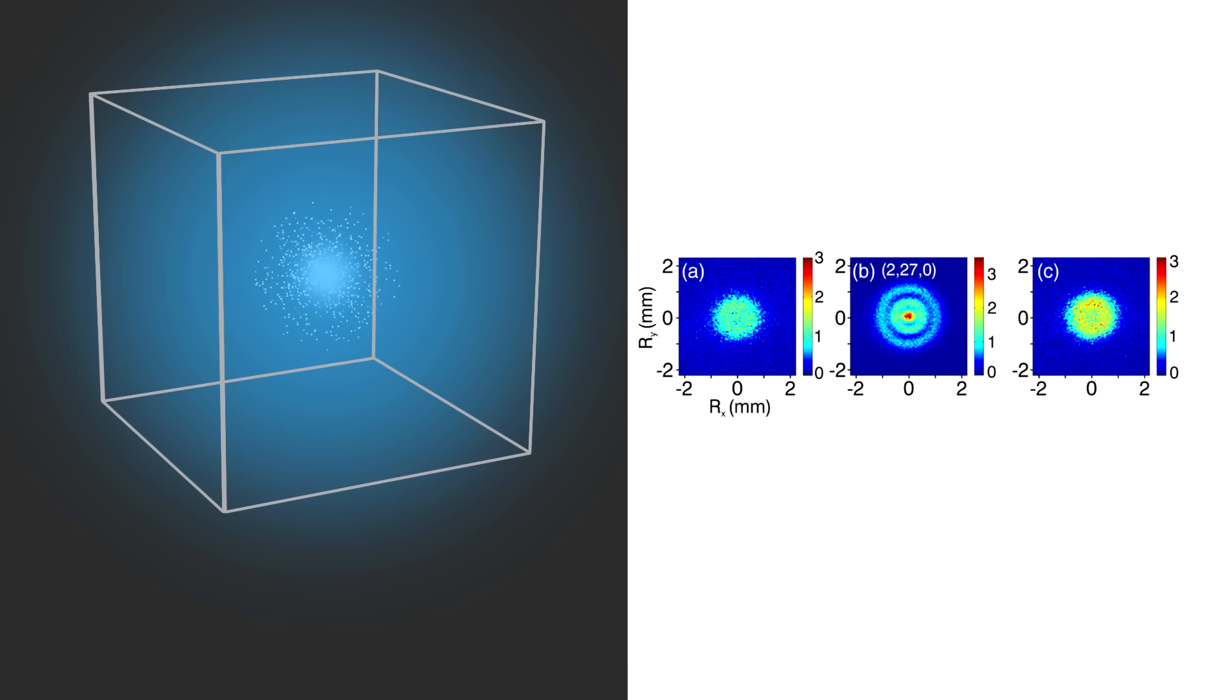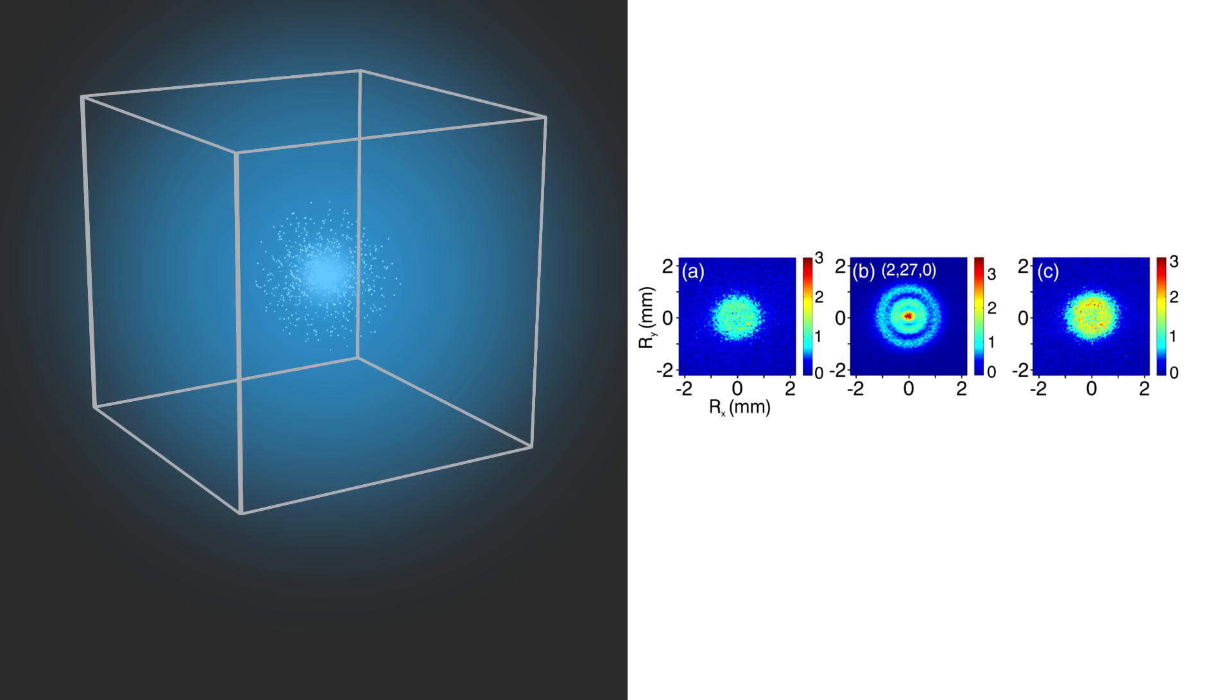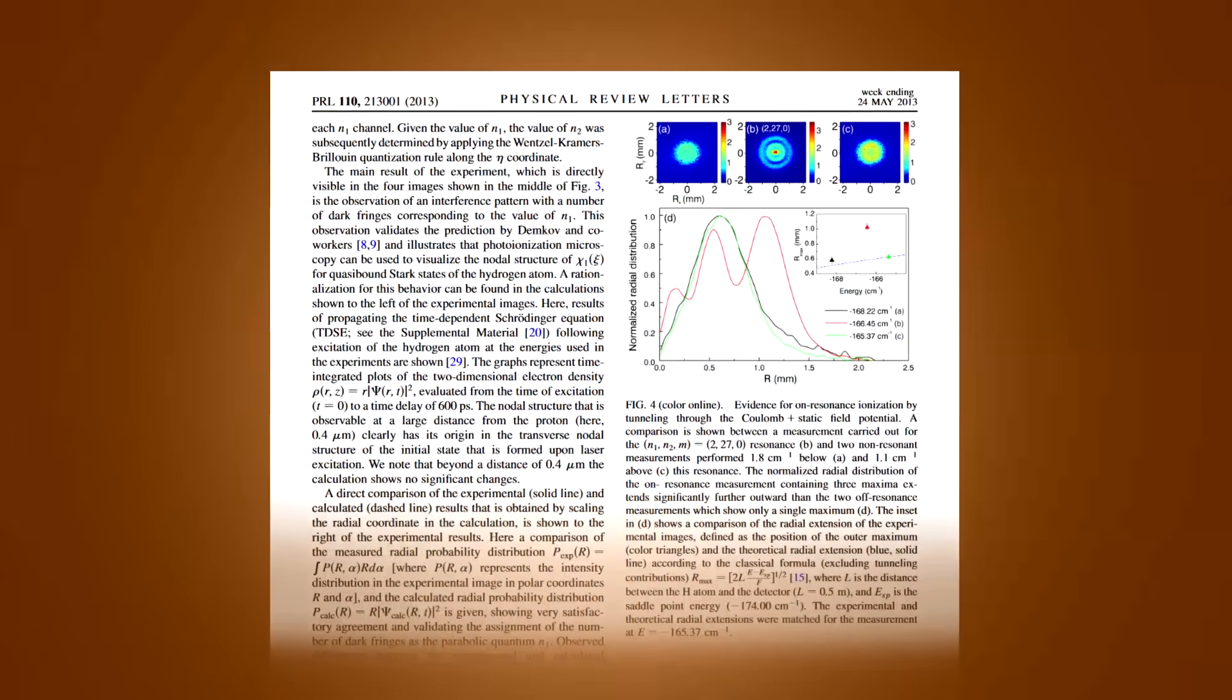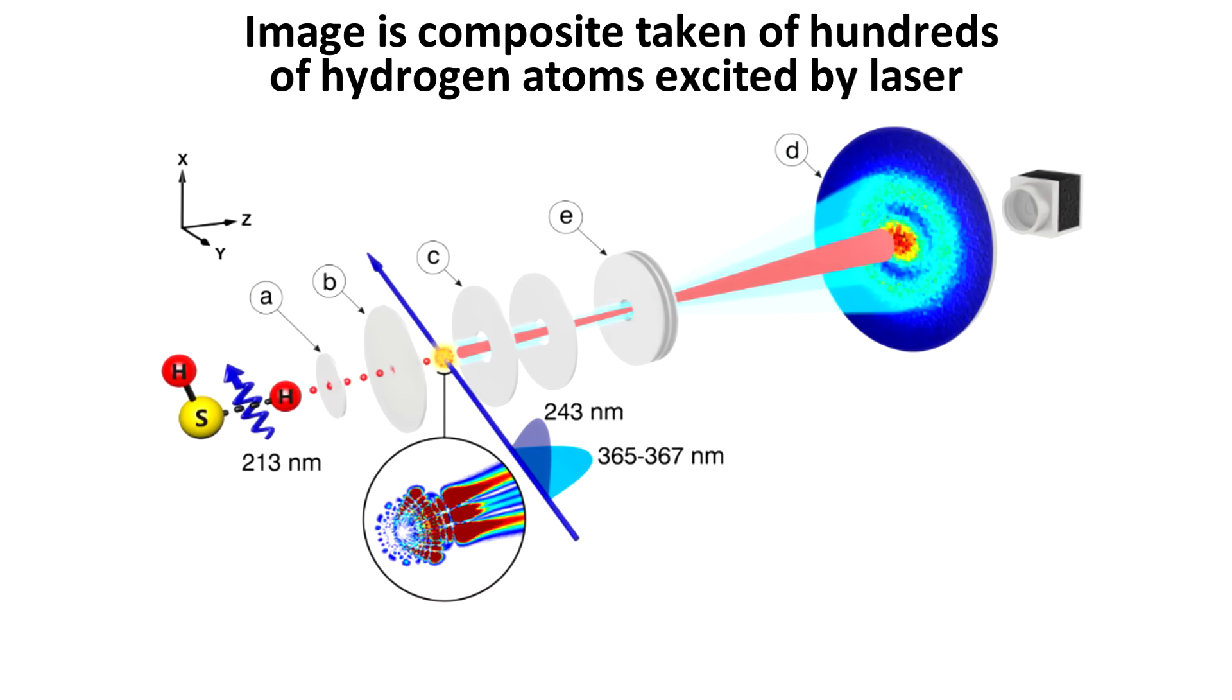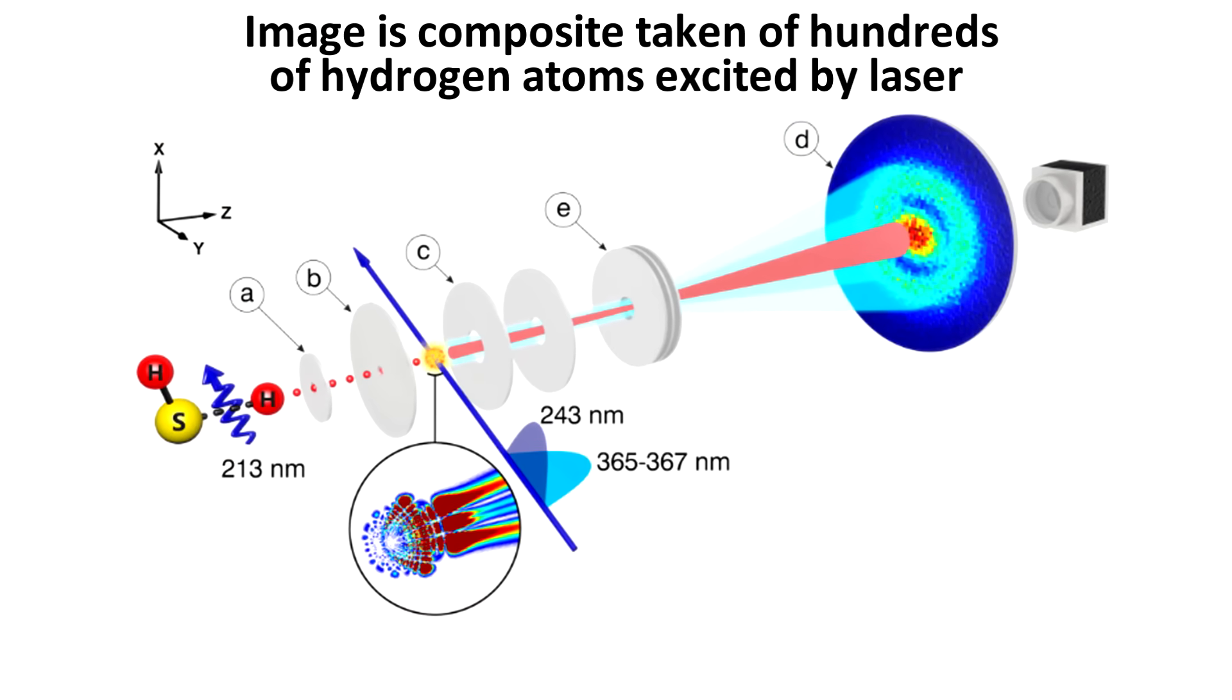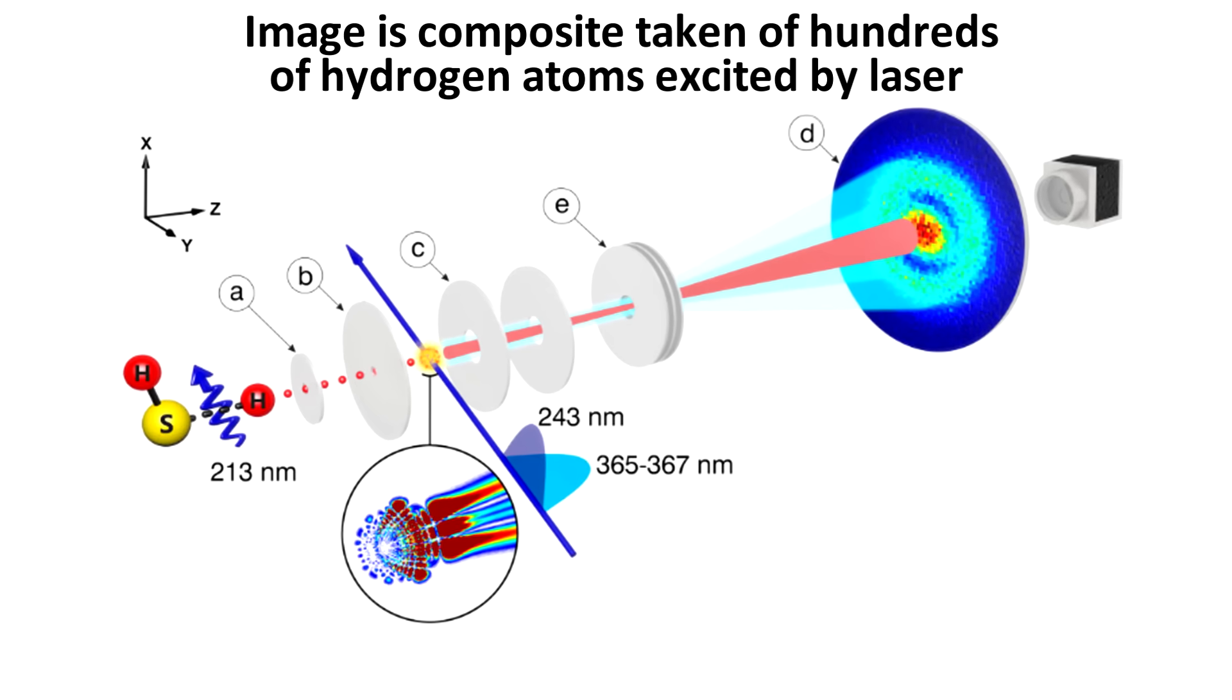Now, given what I just said, how can a photograph like this be taken? Well, this is not a direct image. If you read the paper, you'll find that it's a composite image based on the trajectory of electrons emitted by hundreds of hydrogen atoms after they're excited by lasers.